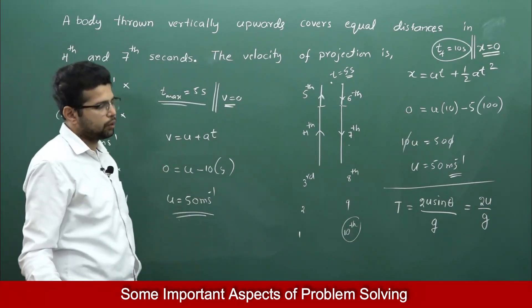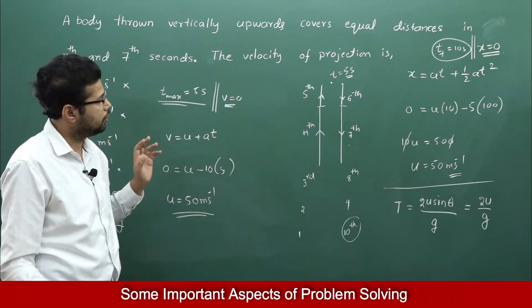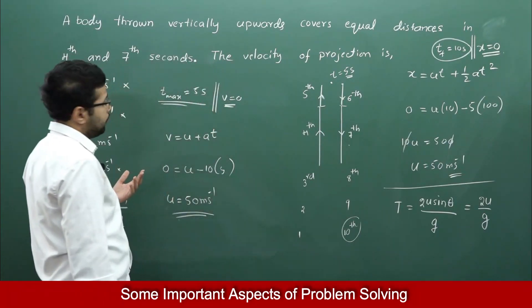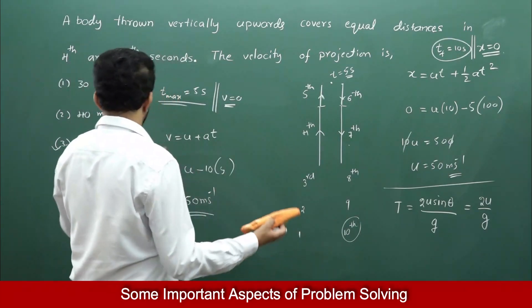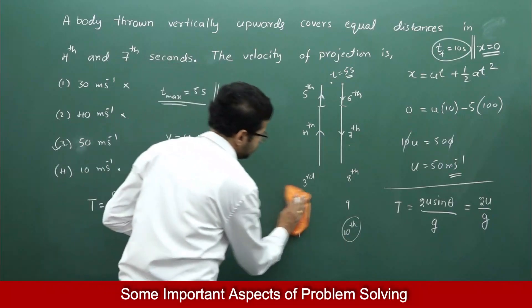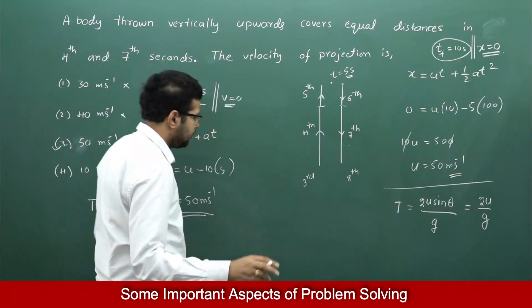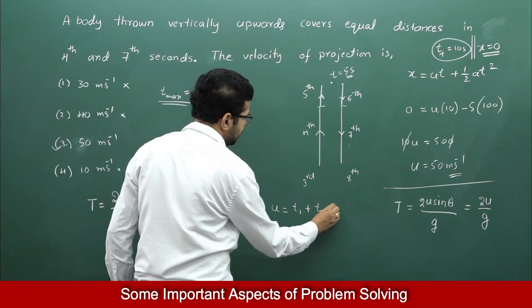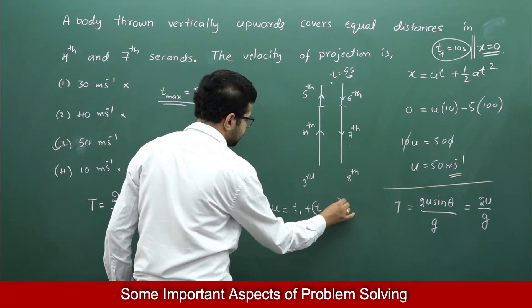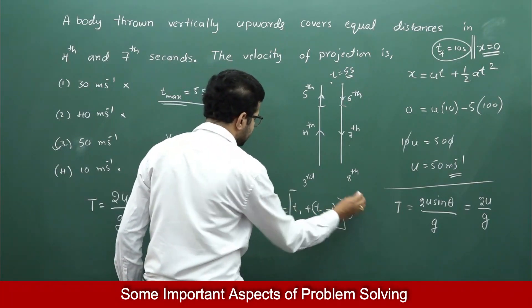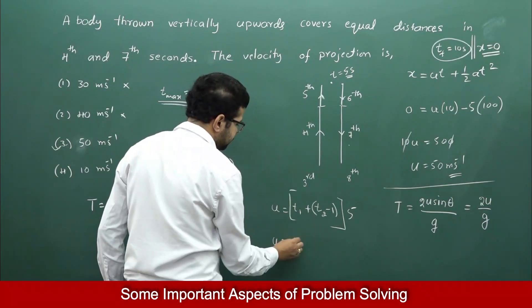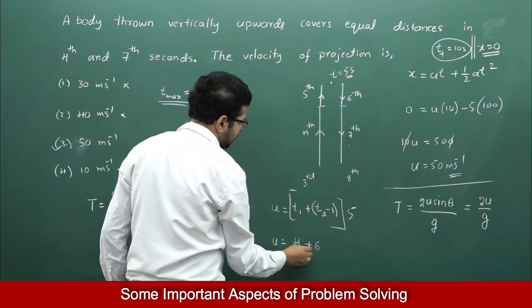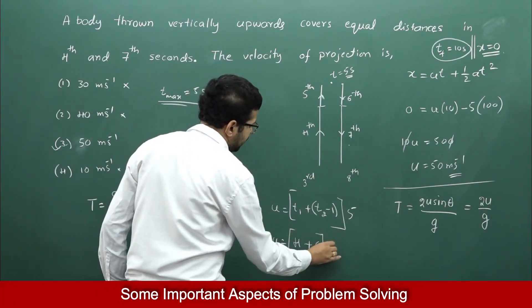You can also use X = VT − ½aT² equation. We can also use a shortcut: U = (t₁ + t₂ − 1) × 5. So, (4 + 7 − 1) × 5 = 10 × 5 = 50 metres per second. Directly I could have solved this problem this way.